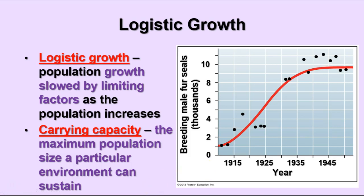Logistic growth is when growth is slowed down by limiting factors like not enough food, space, or water. When the population reaches that limit, we call it the carrying capacity. By definition, the carrying capacity is the maximum population that a particular environment can sustain over the long term, keeping all members of the population with enough food, water, and space to continue to survive and maintain population numbers.